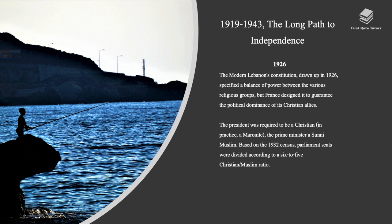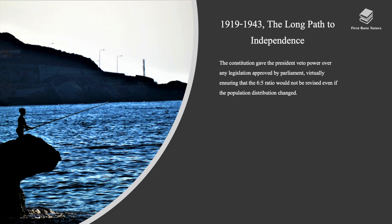Lebanon's modern constitution, drawn up in 1926, specified a balance of power between the various religious groups, but France designed it to guarantee the political dominance of its Christian allies. The president was required to be Christian, the prime minister a Sunni Muslim. Based on the 1932 census, parliament seats were divided according to a 6-to-5 Christian-to-Muslim ratio. The constitution gave the president veto power over any legislation approved by parliament, virtually ensuring that the 6-to-5 ratio would not be revised even if the population distribution changed.